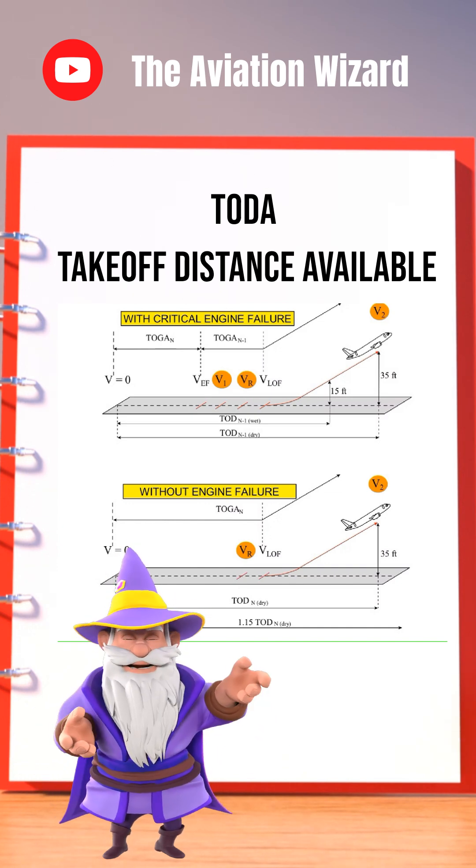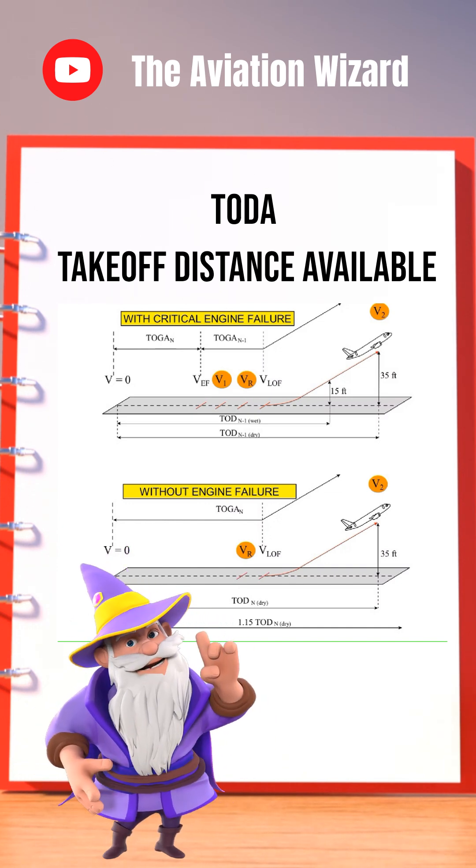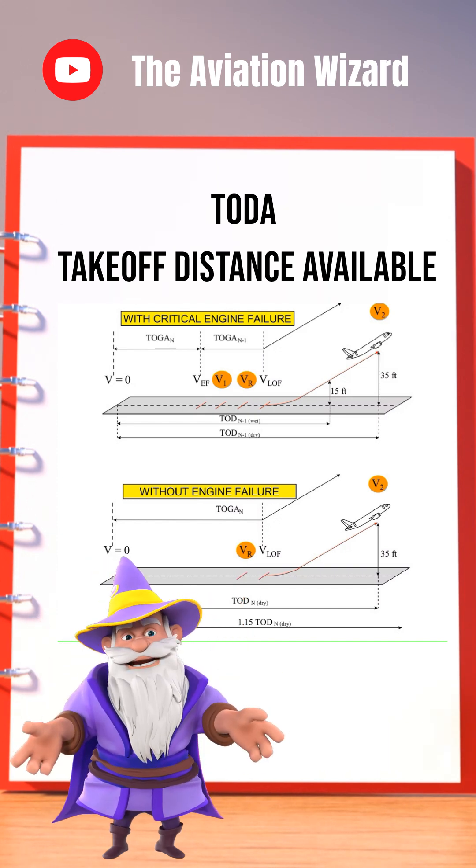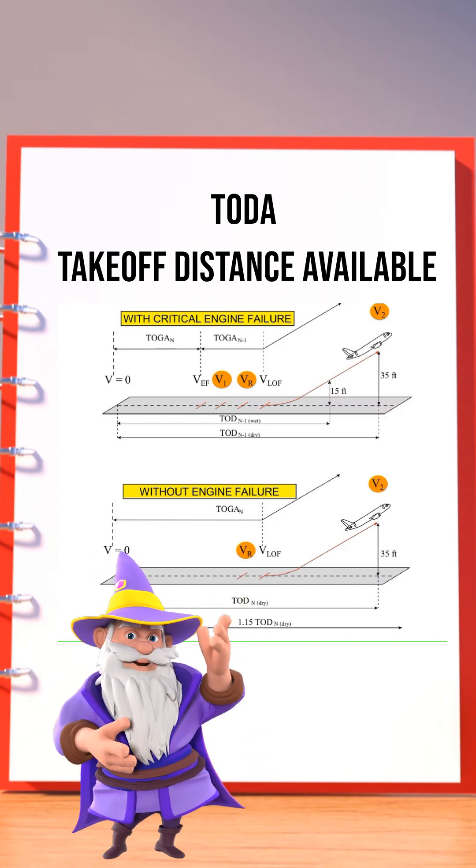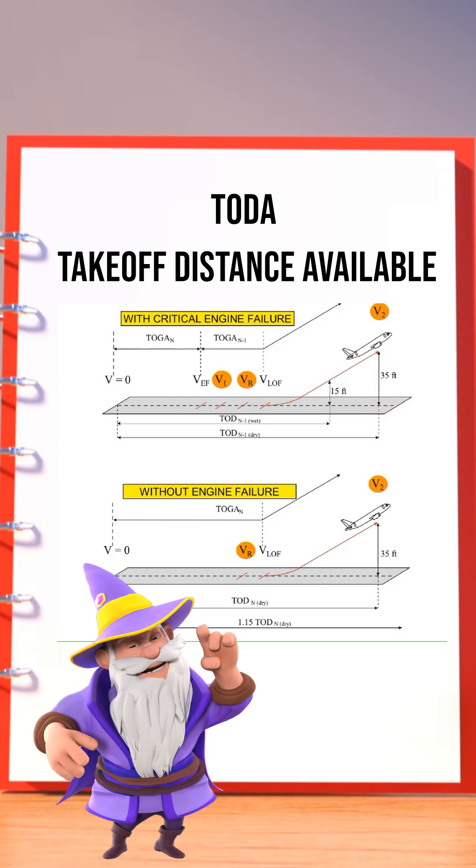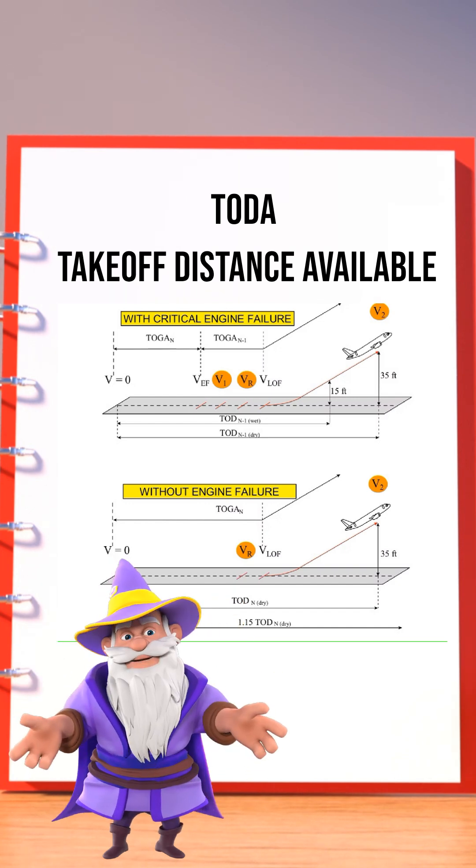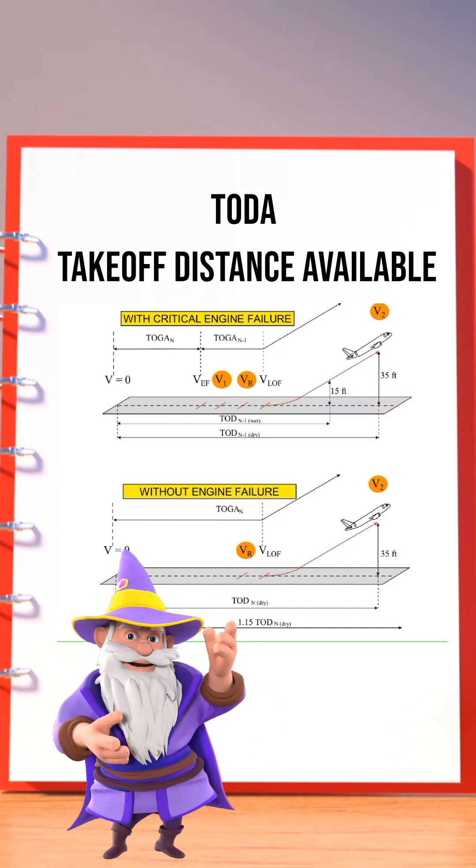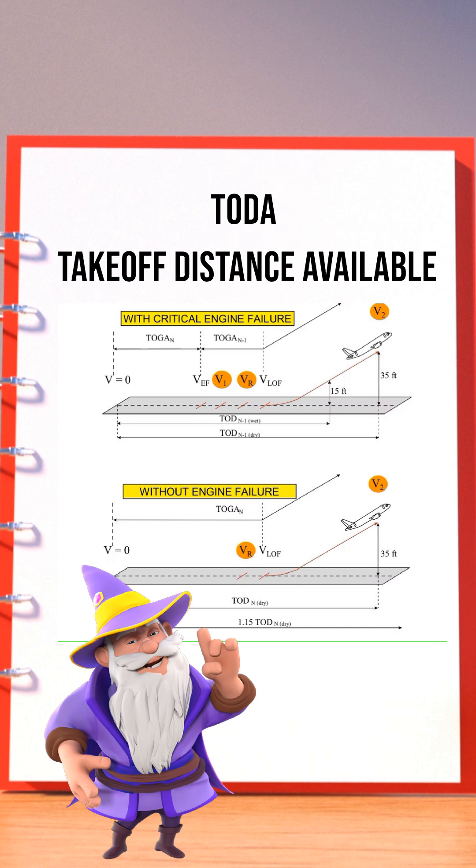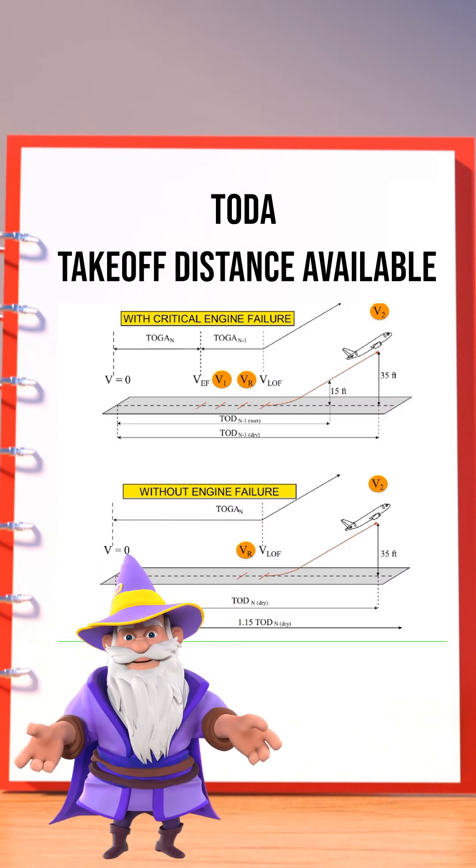Screen height is the minimum height an aircraft must reach by the end of the TODA to ensure obstacle clearance and performance compliance. It is typically 35 feet for a dry runway and 15 feet for wet or contaminated runways as per regulatory requirements.